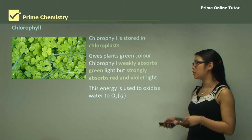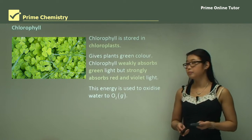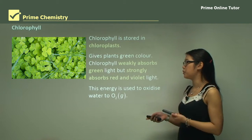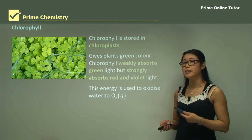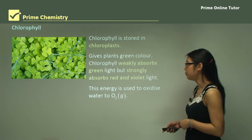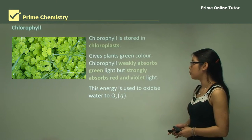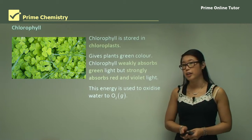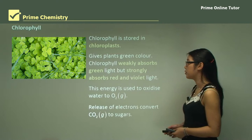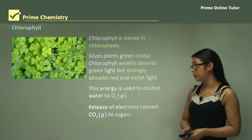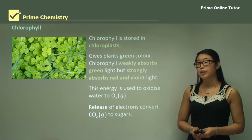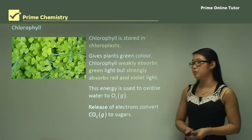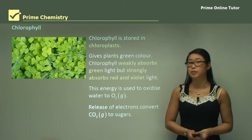This energy is used to oxidise water to produce oxygen gas. When we oxidise the water to produce oxygen gas, it produces a lot of electrons, and the release of those electrons converts CO2 into the sugars.